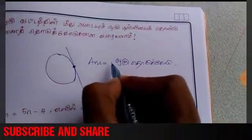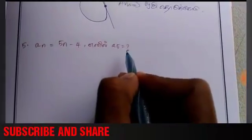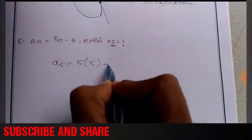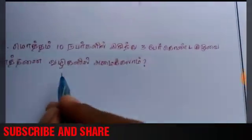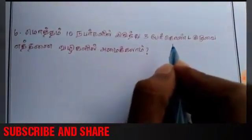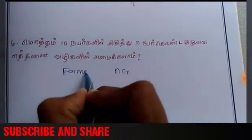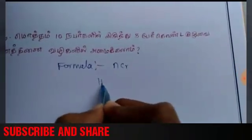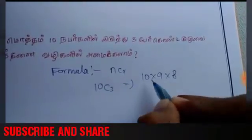Answer is equal to 5n minus 4, equal to 5n minus 4, equal to 5. The answers plus 5 equal to 5, equal to 3. Singing was 10, C is 3. 10 is equal to reverse 3 numbers: 10, 9, 8. 3 is equal to 3, 1.